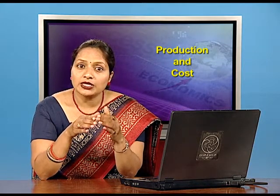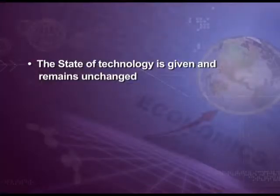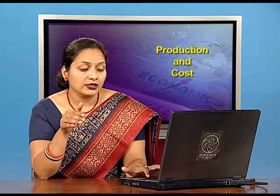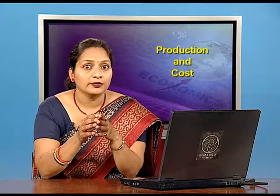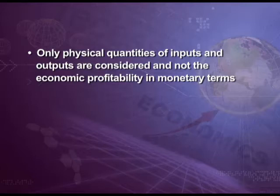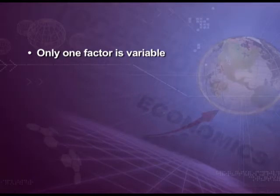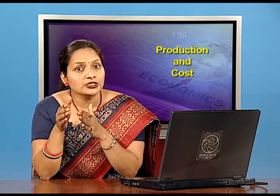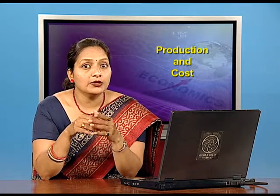This short run law is based on certain assumptions. First, the state of technology is given and remains unchanged, because if there is any improvement in technology then marginal and average product may rise instead of falling. Second, only physical quantities of inputs and outputs are considered, not the economic profitability in monetary terms. Third, only one factor is variable — this law does not apply when all factors of production are proportionately changed. When all factors are proportionately changed, the law of returns to scale is applicable.